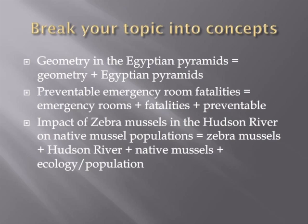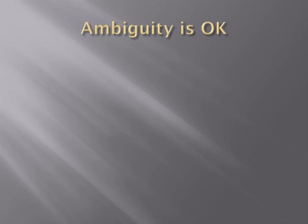When you start out, you have a topic that may actually be the intersection of a number of different topics. Separate them out. Geometry in the Egyptian pyramids equals geometry plus Egyptian pyramids. Preventable emergency room fatalities equals emergency rooms plus fatalities plus preventable. Impact of zebra mussels in the Hudson River on native mussel populations equals zebra mussels plus Hudson River plus native mussels plus ecology or population. The divisions won't always be clean. Is preventable fatalities one concept or two? How about Egyptian pyramids? It's okay not to be sure.